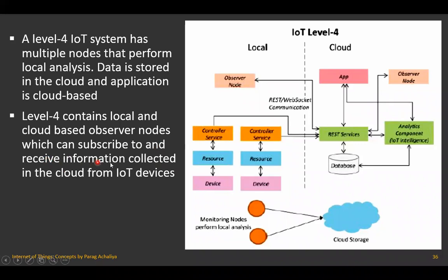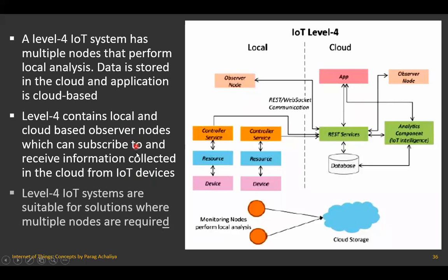The observer node can subscribe to and receive information collected in the cloud from IoT devices. Whatever data is generated — whether sensor data or actuation data — all that data is stored in the cloud by the observer node, which is present on both the local side and the cloud side. Level four IoT systems are suitable for solutions where multiple nodes are required.